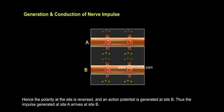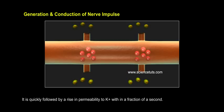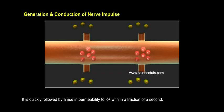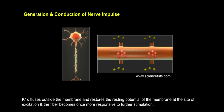Thus, the impulse generated at site A arrives at site B. The sequence is repeated along the length of the axon and consequently the impulse is conducted. The rise in stimulus-induced permeability to Na+ is extremely short-lived. It is quickly followed by a rise in permeability to K+ within a fraction of a second. K+ diffuses outside the membrane and restores the resting potential at the site of excitation, and the fiber becomes once more responsive to further stimulation.